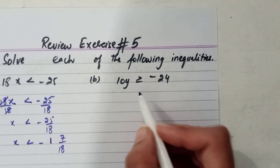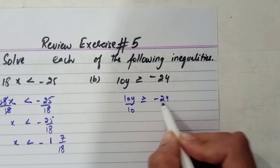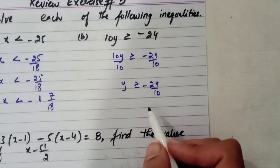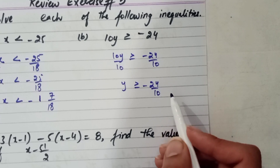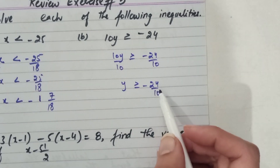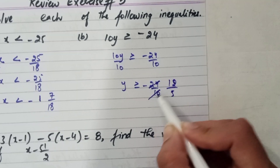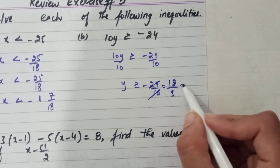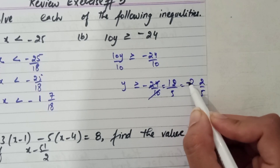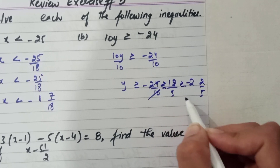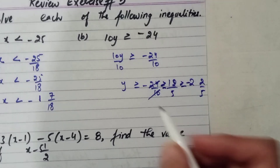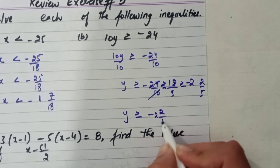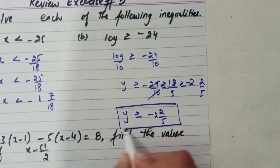For part b, we divide both sides by 10. This is also an improper fraction; we write it as a mixed number or in decimal: 2.4. We also note that the inequality sign remains as given — we do not write an equals sign. The answer is minus 2 over 5.